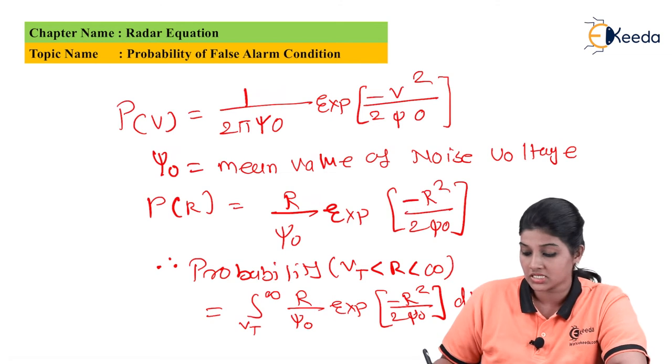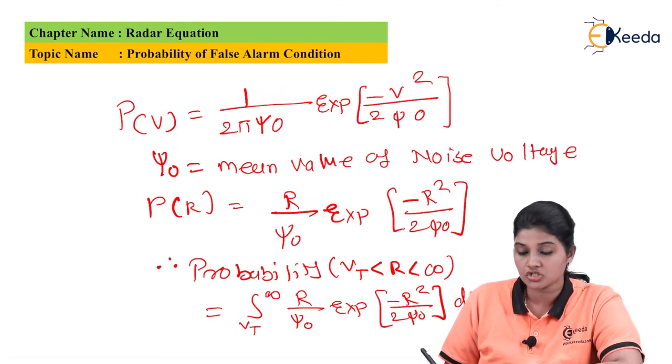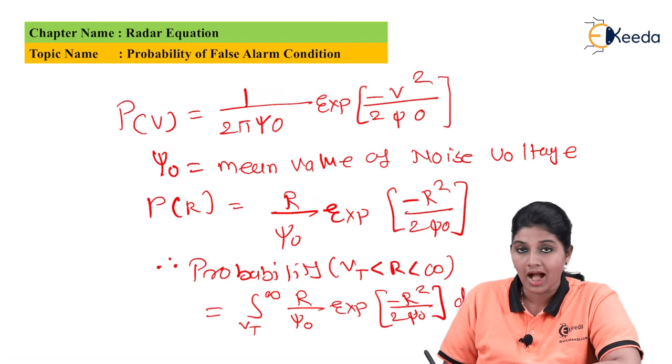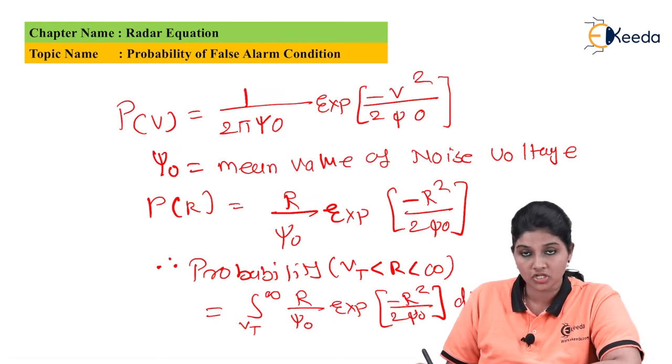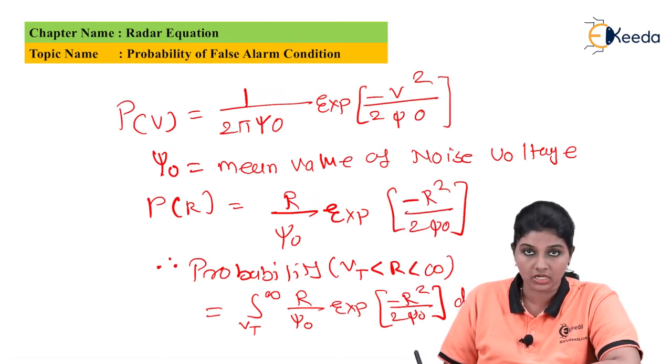Probability Vt less than r less than infinity equals the integration from Vt to infinity of r upon σ₀, exponential of minus r squared upon 2σ₀ dr. So now the equation can be further represented as...